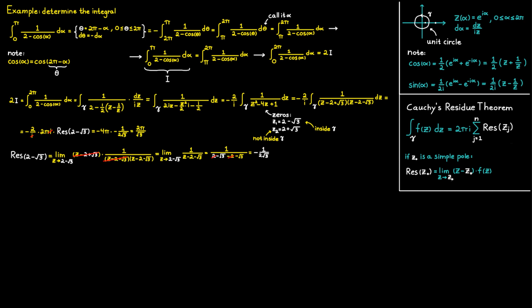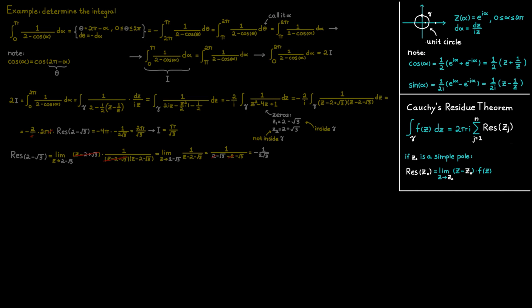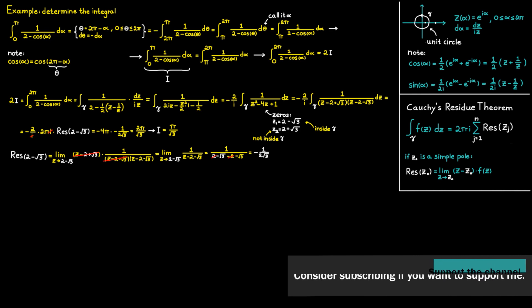Since the result equals 2I and we want I, we divide by two to get the final answer: pi divided by the square root of three. This second example is probably the harder type you will encounter in a course, because you have to rewrite the integral into the right form first, which can be tricky without knowing the properties of cosine and sine. After that, you use the unit circle parameterization to get the complex integral, which you solve using Cauchy's residue theorem. Consider subscribing if you like this content, and thanks for watching.